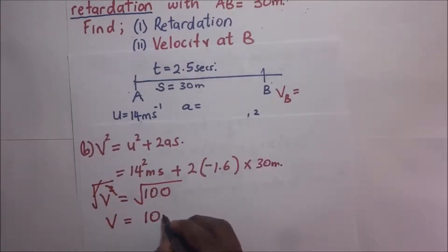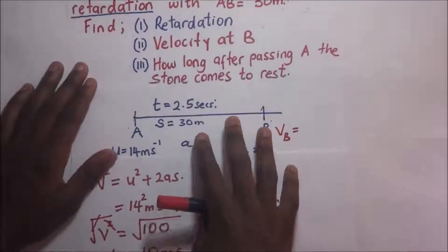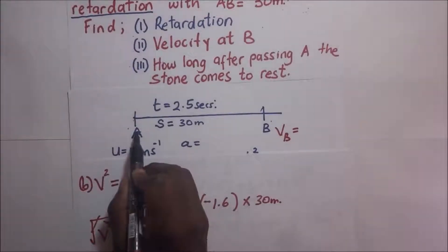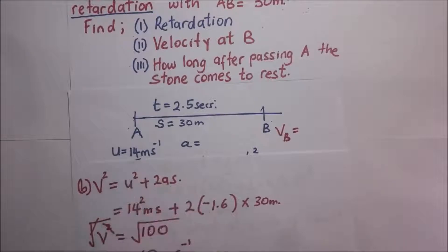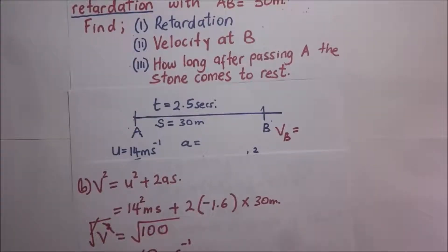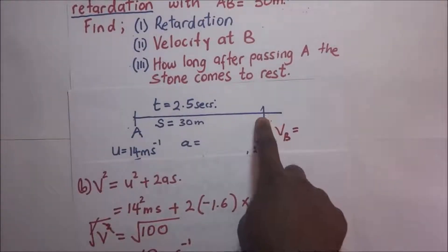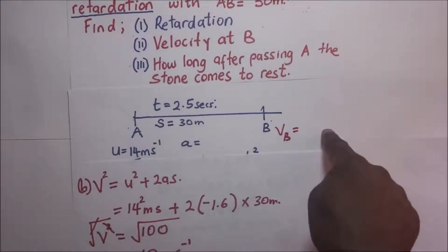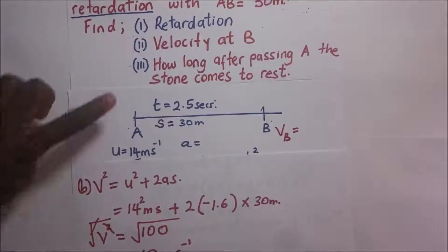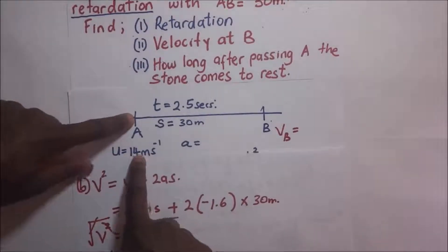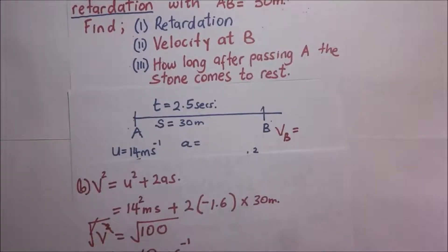For part (iii), the question asks how long after passing A does the stone come to rest. The stone started from A at 14 meters per second, reached point B at 10 meters per second, and must continue until its velocity is zero. So they are asking us to find the time it takes to move from point A until the velocity is zero.